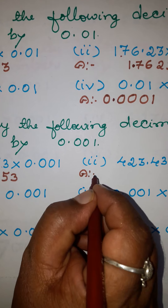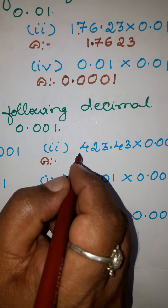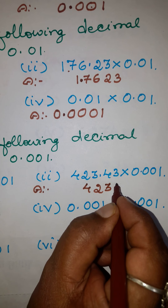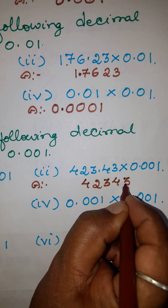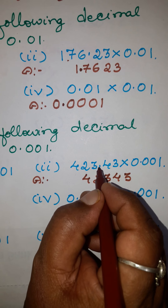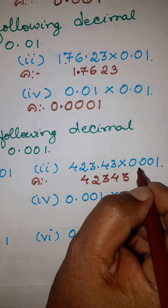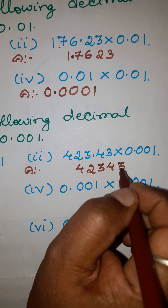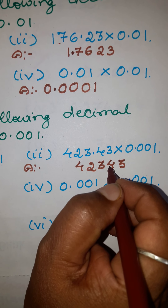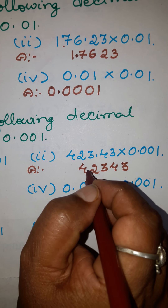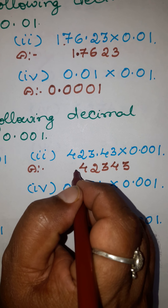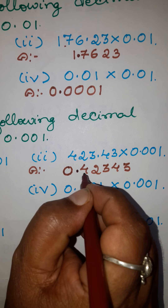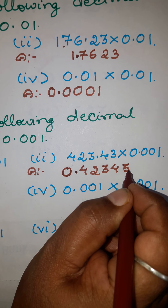Second problem: ignoring the decimal point, write this number as 42343. In this number after the decimal there are two places; in this number after the decimal there are three places. Three plus two is five, so move five places from right to left — one, two, three, four, five. Put the decimal point and a zero here. The answer is 0.42343.